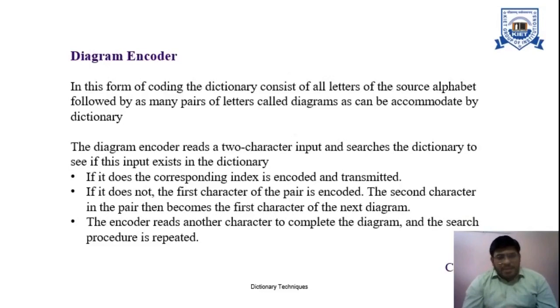In the diagram encoder, this form of coding, the dictionary consists of all letters of the source alphabet, followed by as many pairs of letters called diagrams, as can be accommodated by dictionary.